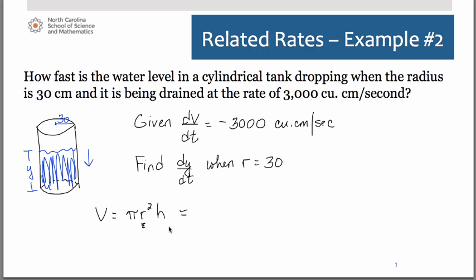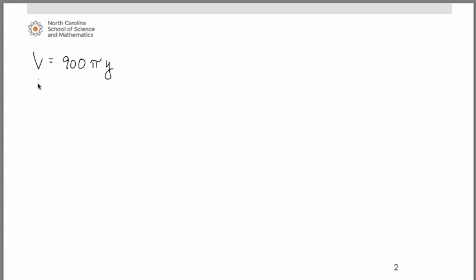When we do that, you have 30 squared, which of course is 900. So the equation we're going to use—and remember we refer to the height as y in this particular case—our equation that we're going to differentiate is simply V = 900πy.